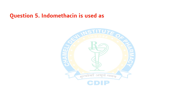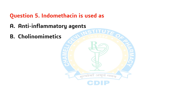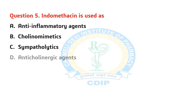Question 5. Indomethacin is used as? A) Anti-inflammatory agents. B) Cholinomimetics. C) Sympatholytics. D) Anticholinergic agents. Answer: A. Anti-inflammatory agents.